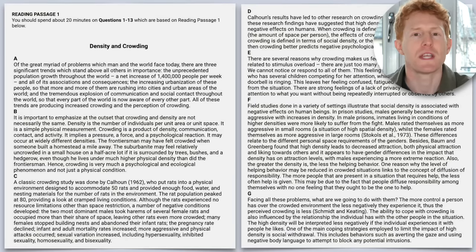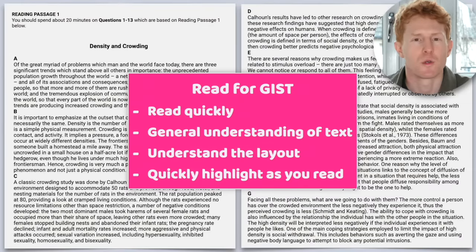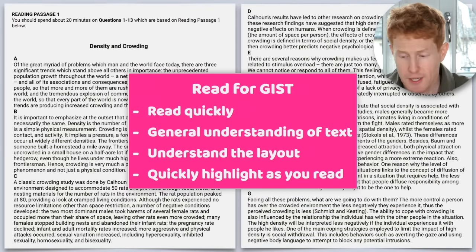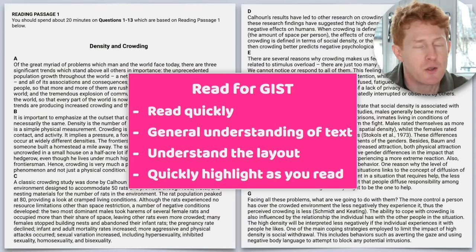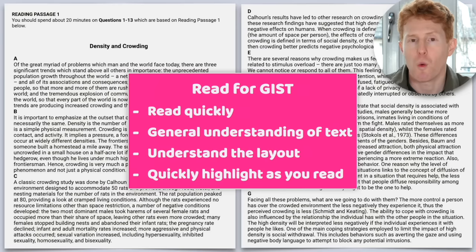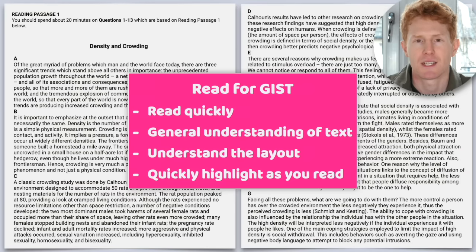And we're going to read this text, but the way we read it is important. We're going to read for gist, which means we're going to read quickly. We're going to get a general understanding of the text. We're going to understand the layout, so where information is in the text. And we're also going to be quickly highlighting words as we read. This is going to help us locate answers later on and also to make sure that our mind doesn't wander and start thinking about something else.